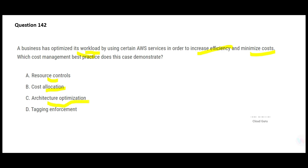Option C — architecture optimization — is something we should consider as a best practice to reduce cost. For example, if you have an architecture heavily using disaster recovery solutions with the same application across multiple regions, you should review whether you really require that kind of architecture and optimize it. In other words, you examine your setup and ask whether you need all of it just to keep things running.